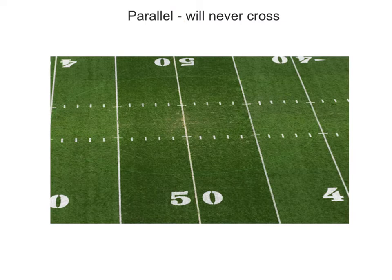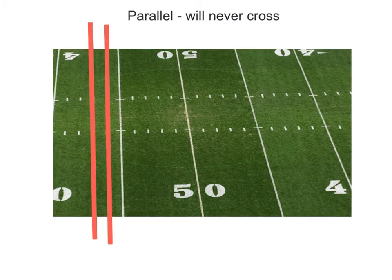For instance, this line on the football field and this line — they'll never cross. They will never, ever touch each other. If we check out the little lines on the football field, this one will go that way forever, this will go that way forever — they will never, ever cross.